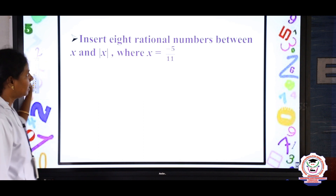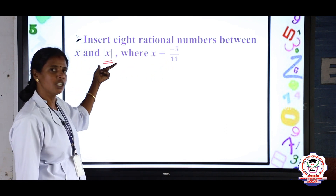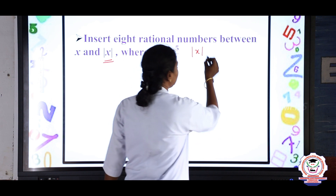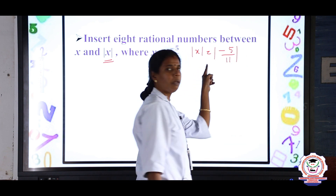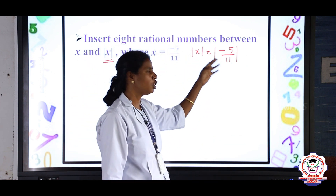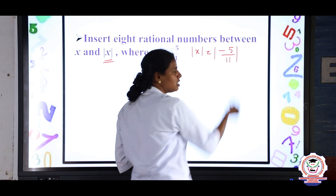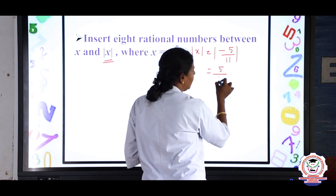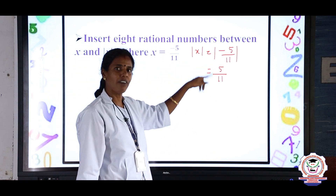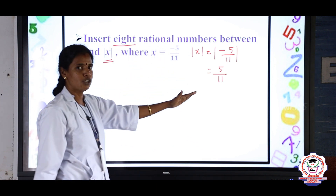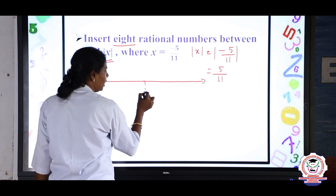Next: insert 8 rational numbers between x and modulus of x, where x = minus 5/11. Modulus of x is always positive, so modulus of minus 5/11 = 5/11. We are going to find 8 rational numbers between minus 5/11 and 5/11. We can draw a number line — at the middle is 0.